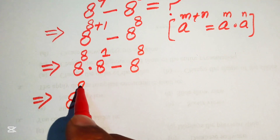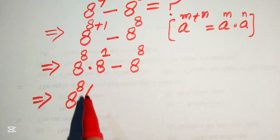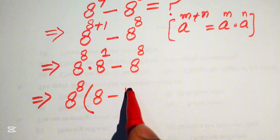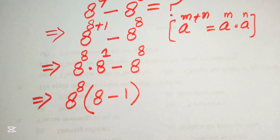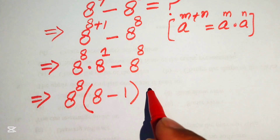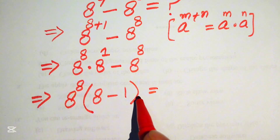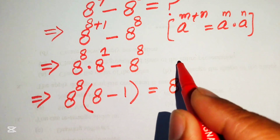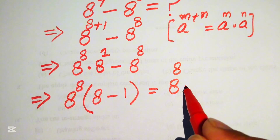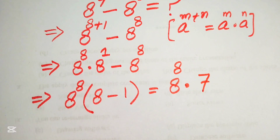Now we see that 8 to the power of 8 is the common term, so we factor it out. The remaining terms give 8 minus 1, which equals 7. So the expression becomes 8 to the power of 8 multiplied by 7.